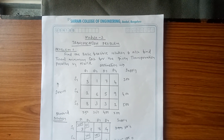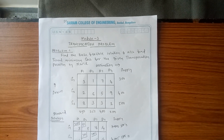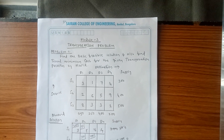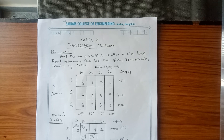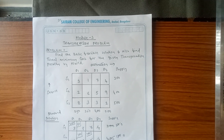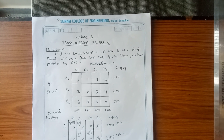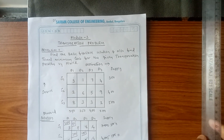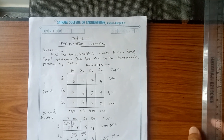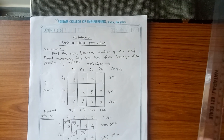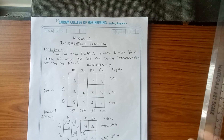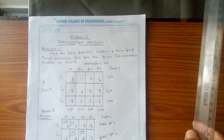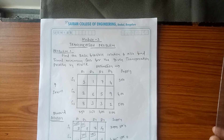In the first problem, we will solve by Northwest Corner Rule. The question asks: find the basic feasible solution and also find the total minimum cost for the given transportation problem. You should read the question twice or thrice to identify which method they are asking — don't confuse. In the examination, among the four methods, they may ask you any one method.